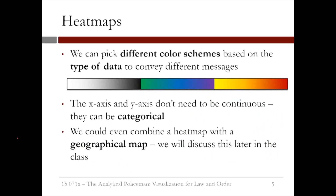In a heat map, we can pick different color schemes based on the type of data to convey different messages. In crime, a yellow to red color scheme might be appropriate, because it can highlight some of the more dangerous areas in red. Your eye is naturally drawn to the red areas of the plot. In other applications, both high and low values are meaningful, so having a more varied color scheme might be useful. And in other applications, you might only want to see cells with high values, so you could use a gray scale to make the cells with low values white.